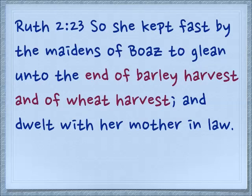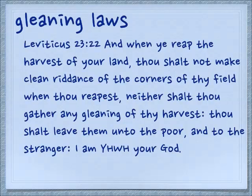In chapter 2 verse 23: 'So she kept fast by the maidens of Boaz to glean unto the end of the barley harvest and of the wheat harvest, and dwelt with her mother-in-law.' From the beginning of the barley harvest until the beginning of the wheat harvest is 50 days — this is the period of counting the Omer — and then she stays on past that into the wheat harvest.